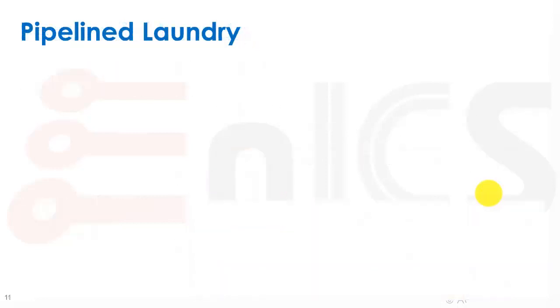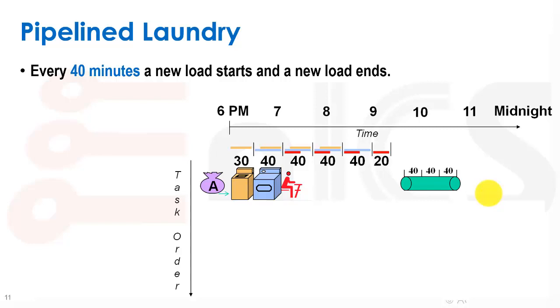But what pipelining does is it sees that we actually have resources that we can reuse when they're finished with their job. In our pipeline example, we actually have three different resources here. We have the washing machine, we have the dryer, and we have the folder. And they're separate from each other. So when the washing machine finishes its job, it's actually idle and we can reuse its time for the next load.